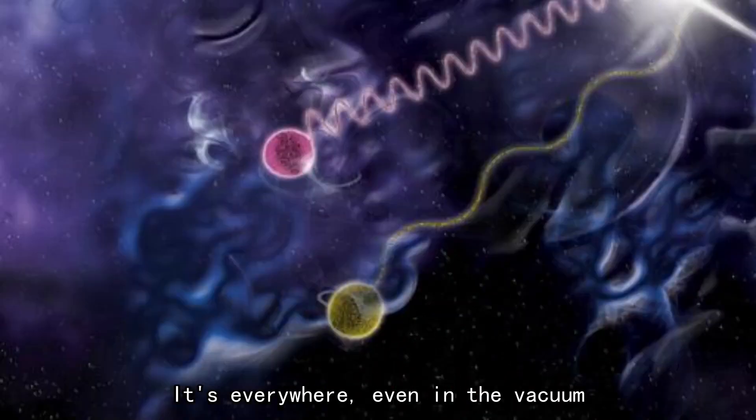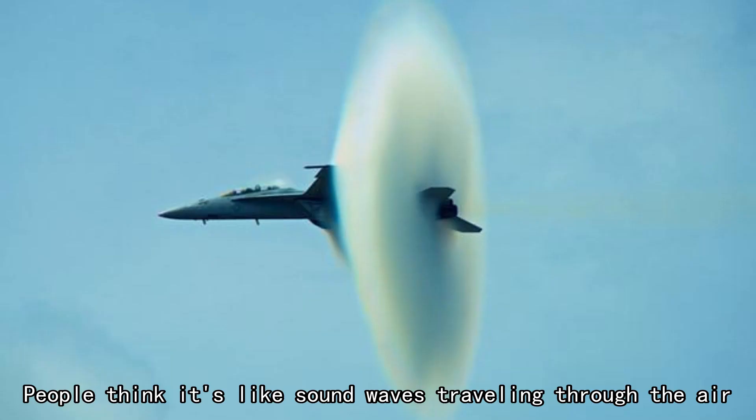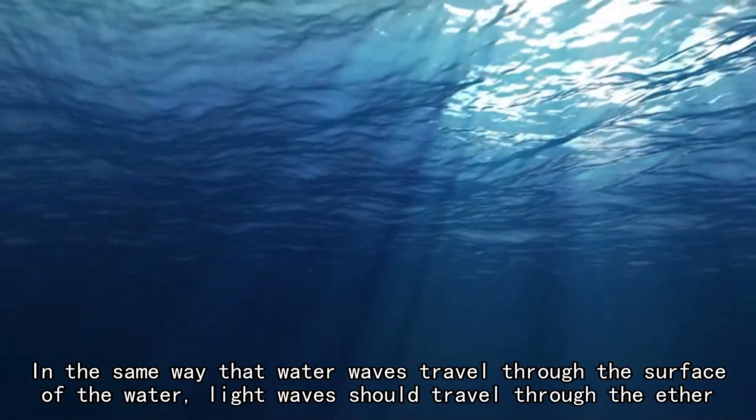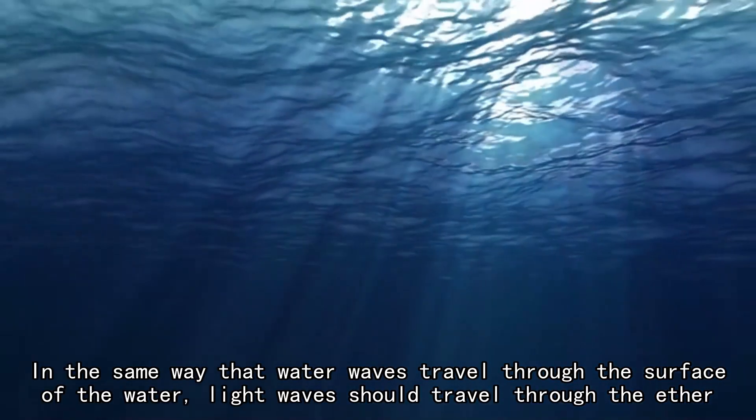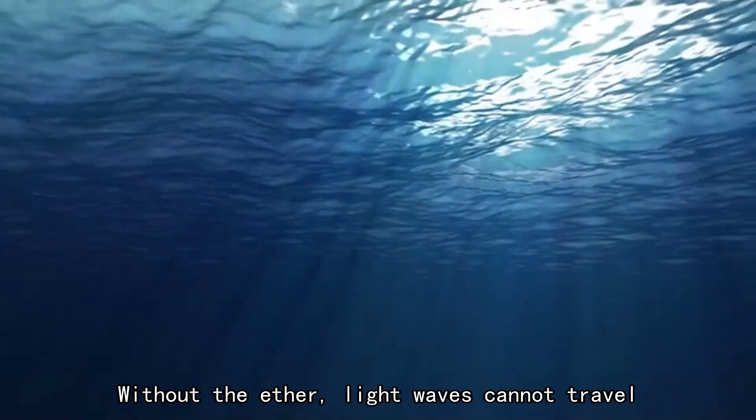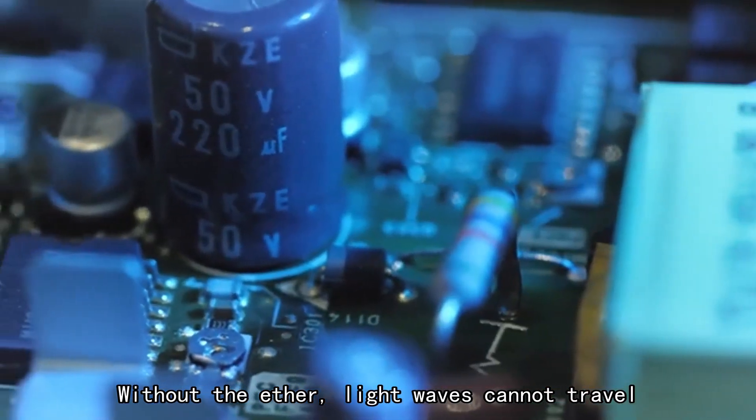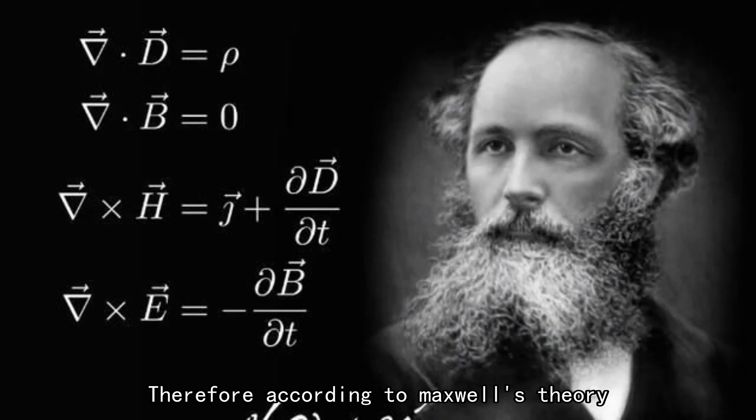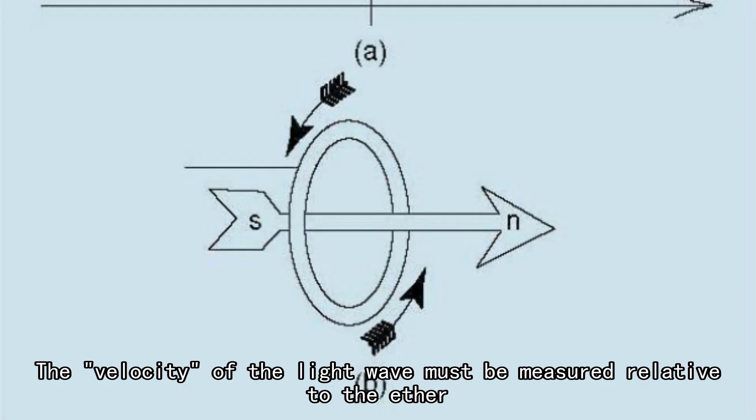Ether is a substance that's everywhere, even in the vacuum. People think it's like sound waves traveling through the air. In the same way that water waves travel through the surface of the water, light waves should travel through the ether. Without the ether, light waves cannot travel. Therefore, according to Maxwell's theory, the velocity of the light wave must be measured relative to the ether.